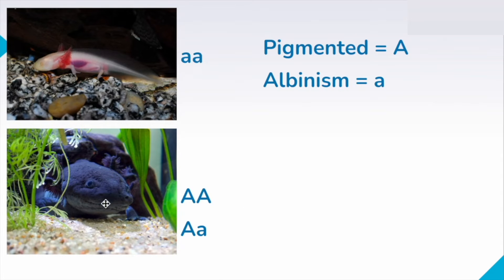Now this pigmented axolotl could be one of two genotypes. It could either be big A, big A, homozygous dominant, or it could be big A, little a, because this big A is dominant over the recessive allele, and it's going to mask or cover up the effects of this recessive gene. So when we see a pigmented axolotl, it could be either one of these genotypes, but both of these genotypes will give us the pigmented phenotype.